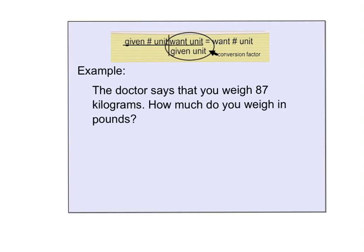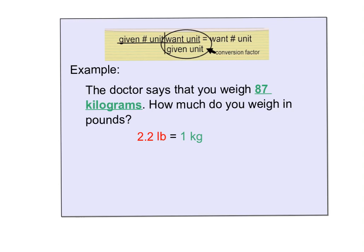You go to the doctor, and he says that you weigh 87 kilograms. How much do you weigh in pounds? Notice we were given 87 kilograms. That's going to go out in front, and I know that 2.2 pounds is equal to one kilogram. I would like you to pause the video and try this on your own. I'll come up with the answer on the next page.